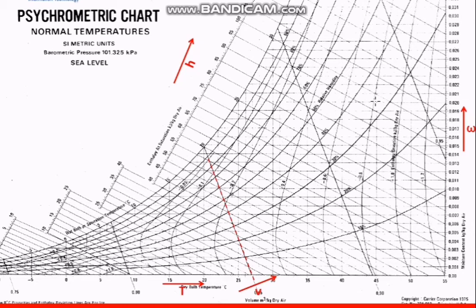To find the dew point temperature from the point at 0.02 and 45°C, we move horizontally to the left, because the humidity ratio remains constant until condensation occurs. Moving left in a straight line, we reach the saturation line — and the dew point temperature here is 25 degrees Celsius. If condensation starts, the process follows along the saturation line.